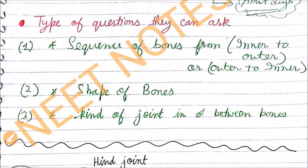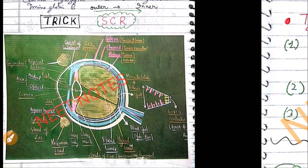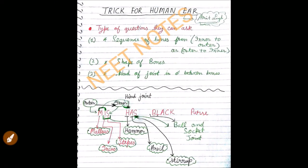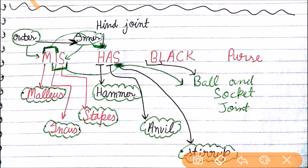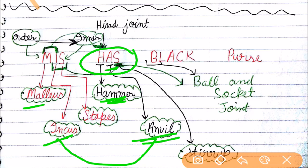Now second question was shape of bones. How will you remember the shape of bone? To remember the shape of bone we have again a trick: Has. H for hammer, so malleus is hammer shape. A for anvil, so incus is anvil in shape. And S for stirrup, which is stapes. Stapes is stirrup in shape.